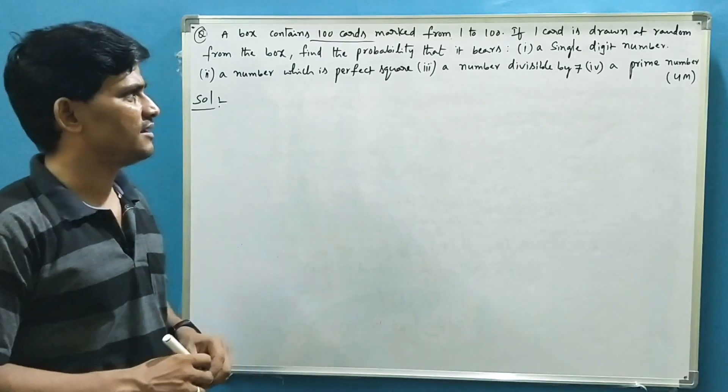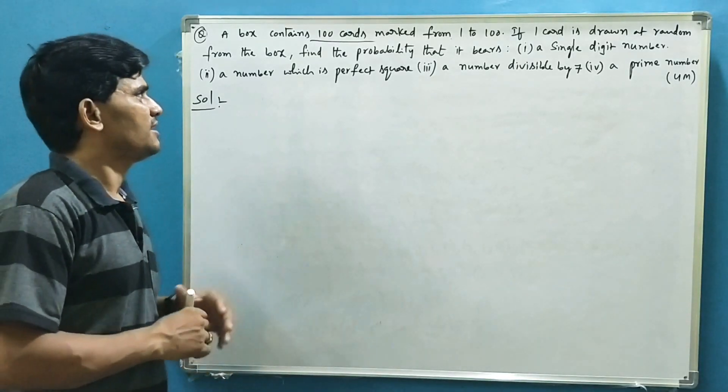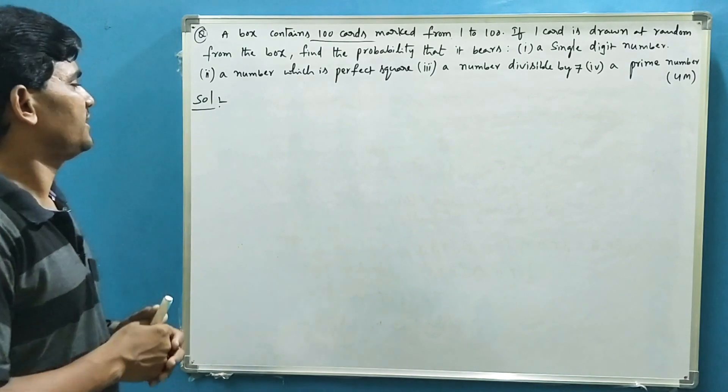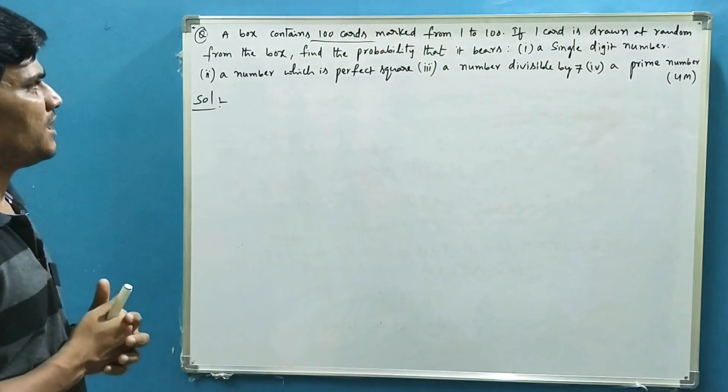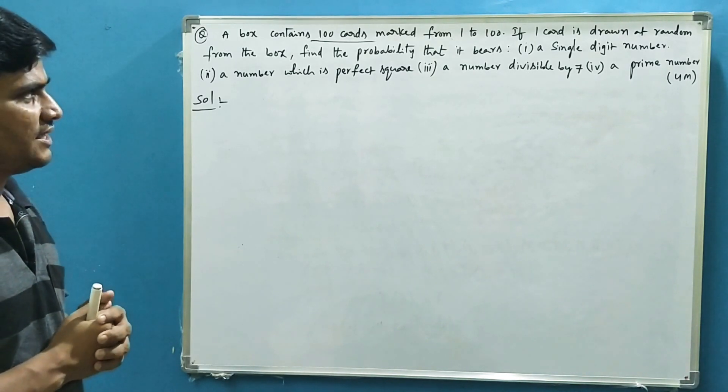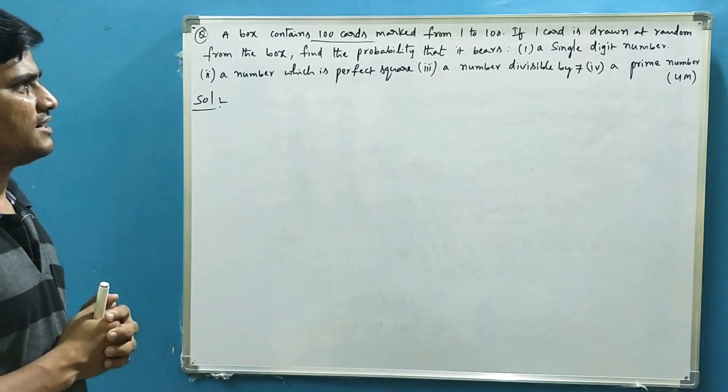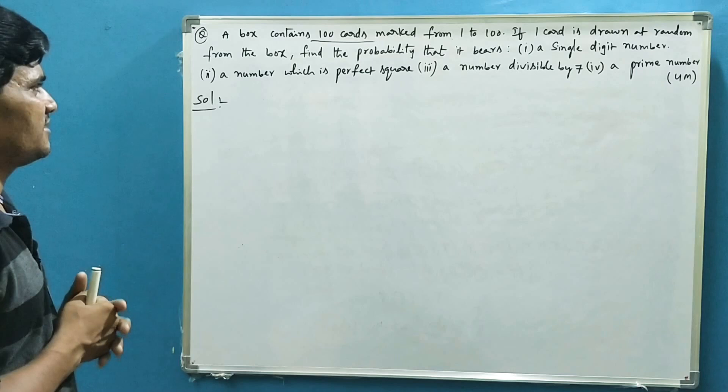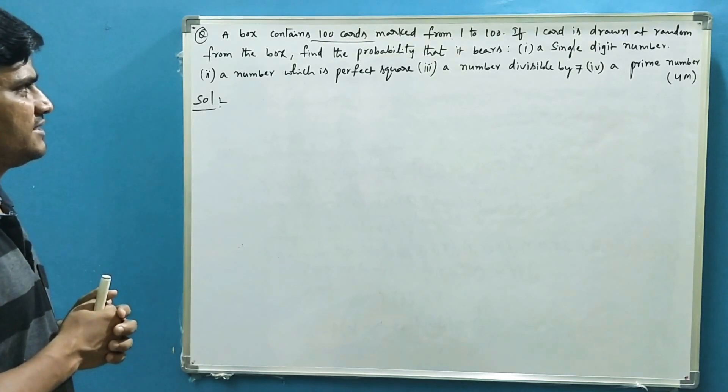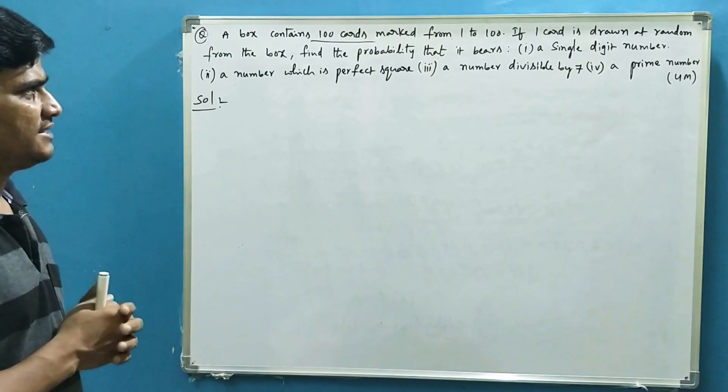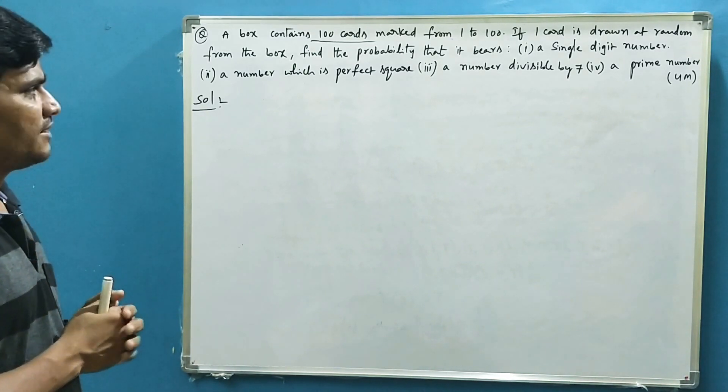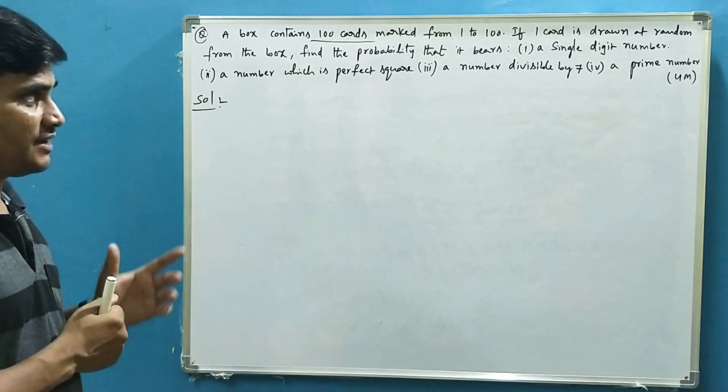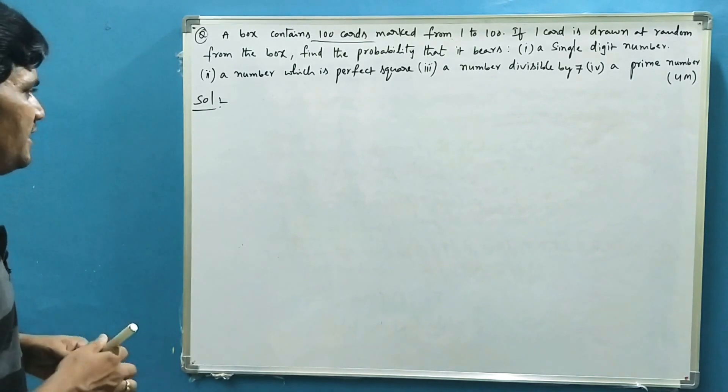Welcome to NGMatch channel. Now let us discuss one more question from probability. The question is, a box contains 100 cards marked from 1 to 100. If one card is drawn at random from the box, find the probability that it bears a single digit number, a number which is perfect square, a number divisible by 7, a prime number. Let us see.